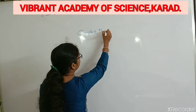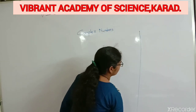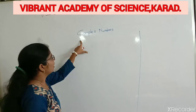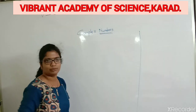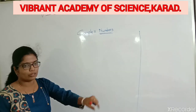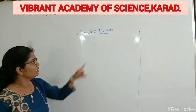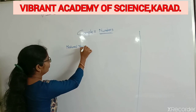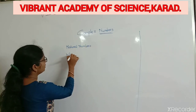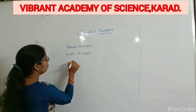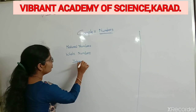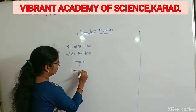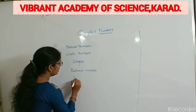Complex numbers — you are all familiar with the number system. The numbers include natural numbers, then whole numbers, integers (positive and negative), rational numbers, and irrational numbers.